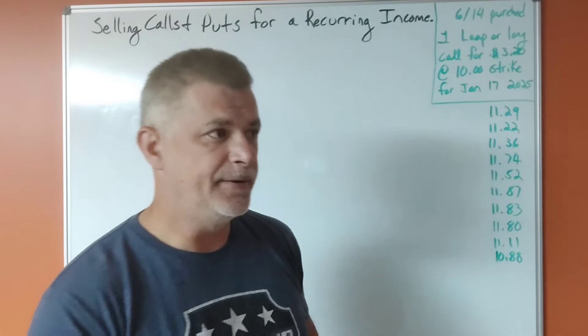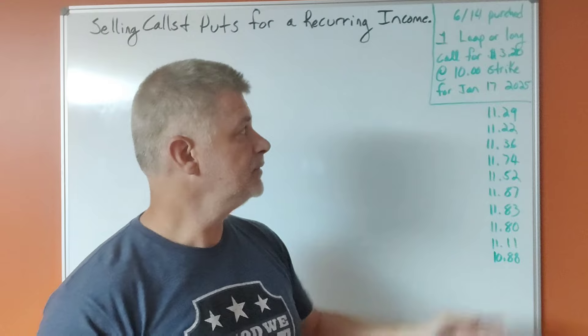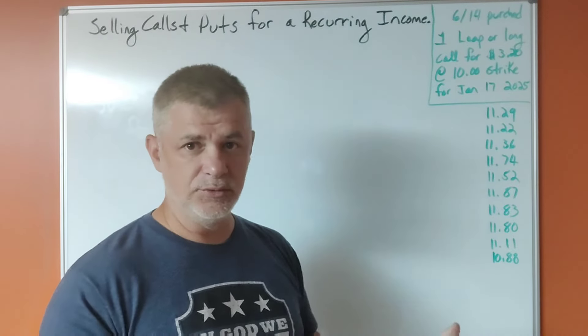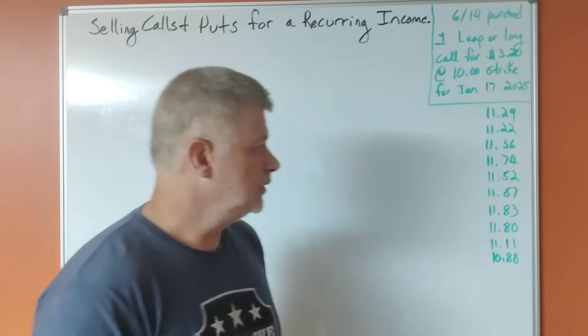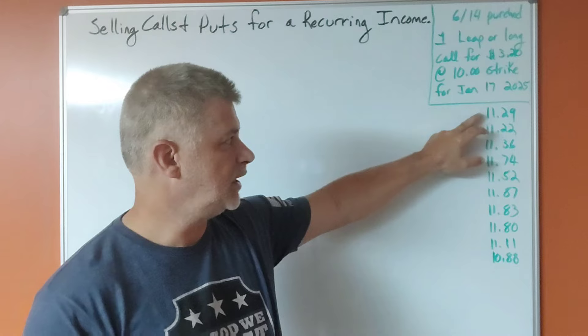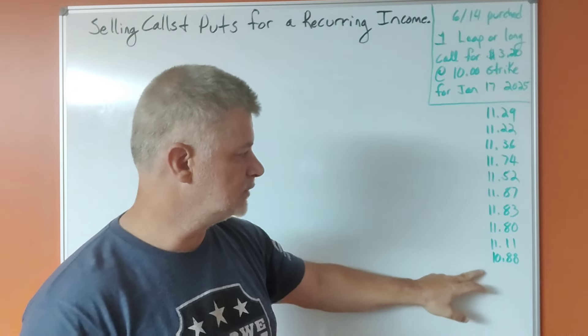So for that to be a winning trade, I need Rivian to be over $13.20 by January 17th, 2025. So that's a little bit of a hedge in case the stock just runs. Now if it doesn't run, if it closes below that, that's a losing trade, of course. Now I have been keeping tabs on where Rivian has been closing, so for the past two weeks...